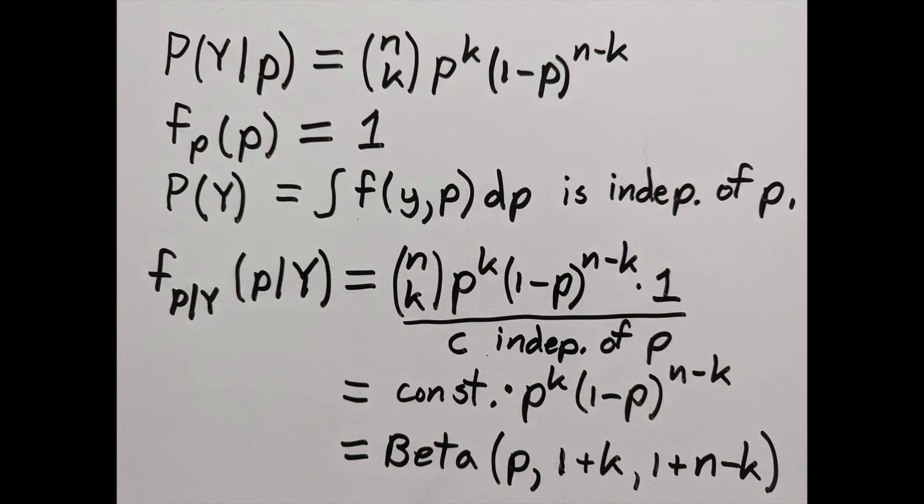For P of Y, we're actually going to use a trick so that we don't need it. Just know that P of Y is the integral of the joint density over p, which means it's independent of p. That's actually all we need to know about it.